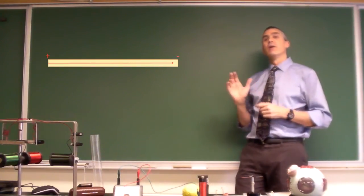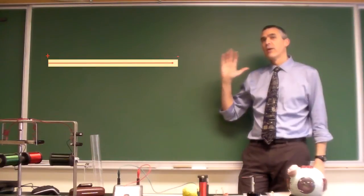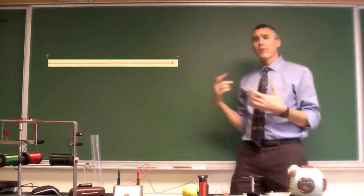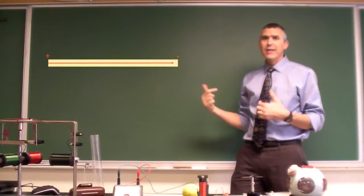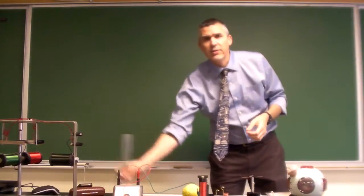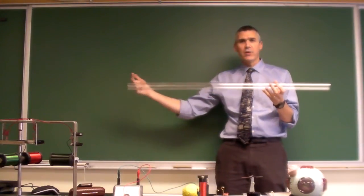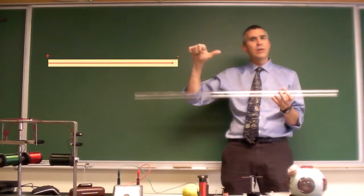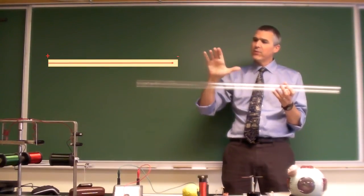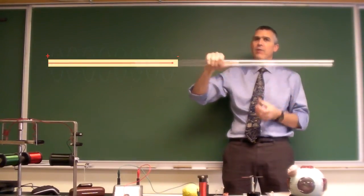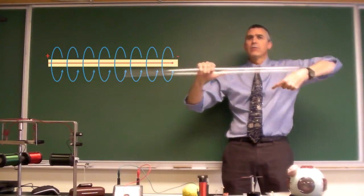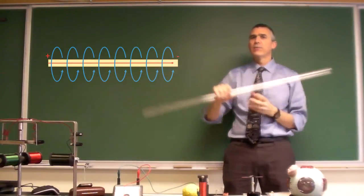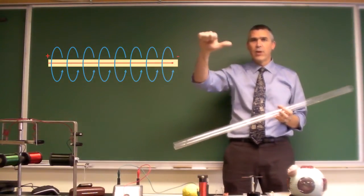Alright, so we're dealing with right-hand rule one dealing with current flow positive to negative. We have current flowing through a straight conductor and it's generating a magnetic field. To find the direction of that, we imagine a pipe and we imagine our current flowing through that pipe. Our thumb represents the direction of current in that pipe, and our fingers represent the direction of the magnetic field around that pipe. So the magnetic field is in concentric circles around and around and around. And that's our first right-hand rule.